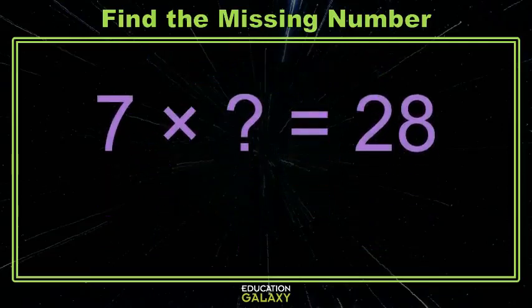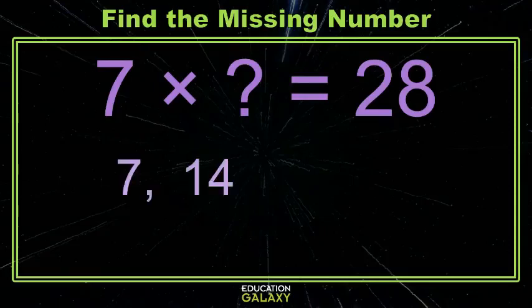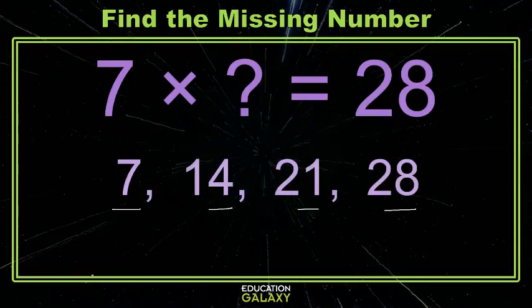Now we can just solve this multiplication fact. Again, let's start with our 7 and just count forward by 7. So 7 plus 7 plus 7 plus 7. Okay, we got there and it took us 1, 2, 3, 4 7s to get there.